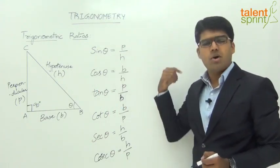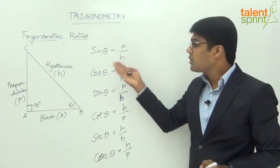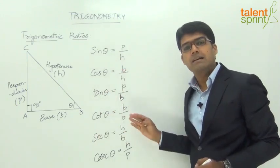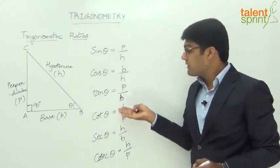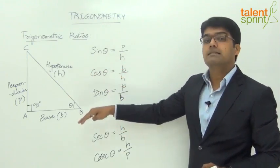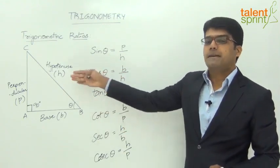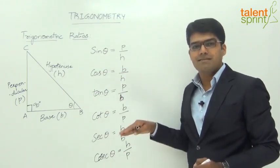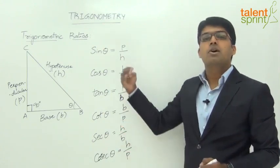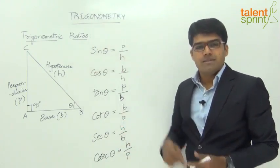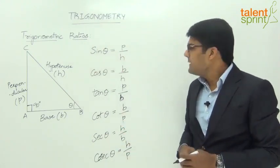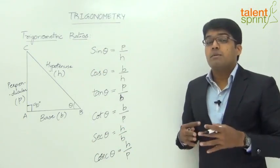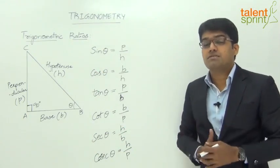To summarize: sine theta is opposite by hypotenuse, cos theta is adjacent by hypotenuse, tan theta is opposite by adjacent, cot theta is adjacent by opposite, secant theta is hypotenuse by adjacent, and cosecant theta is hypotenuse by opposite. Now within these different trigonometric ratios we have some important relations to observe.